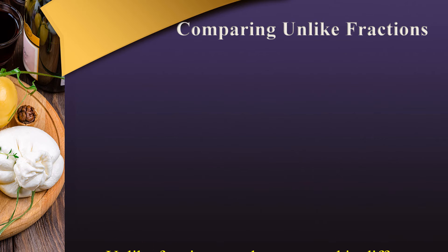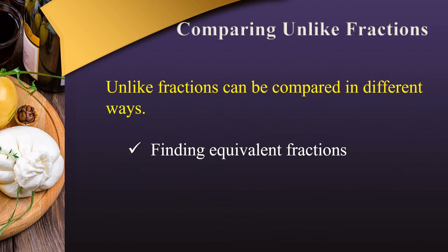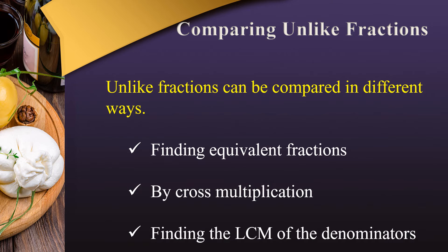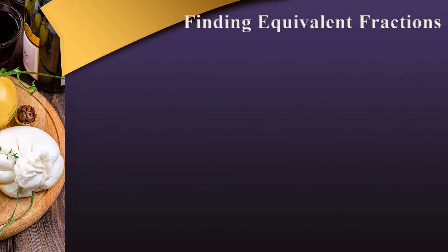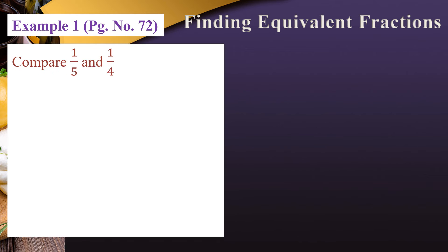Comparing Unlike Fractions: Unlike fractions can be compared in different ways — Finding Equivalent Fractions, Cross Multiplication, and Finding the LCM of the denominators. Let us see each method in detail. The first method is Finding Equivalent Fractions. Example number 1, page number 72: Compare 1/5 and 1/4.